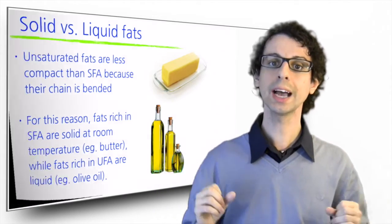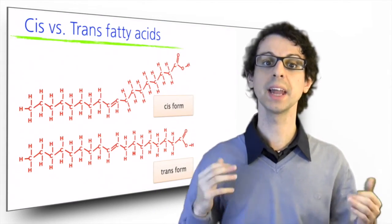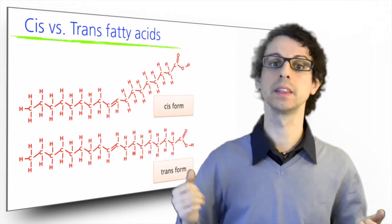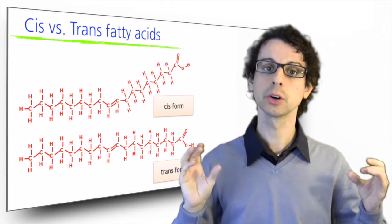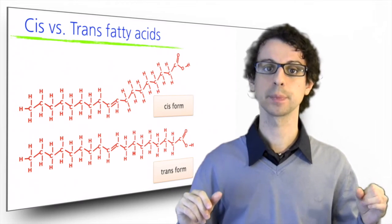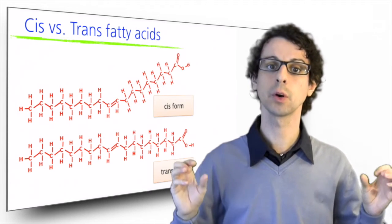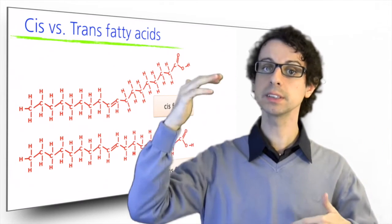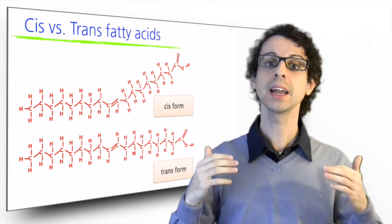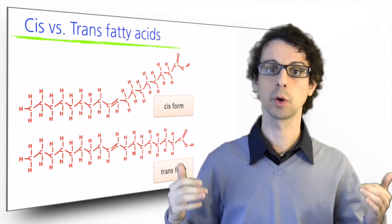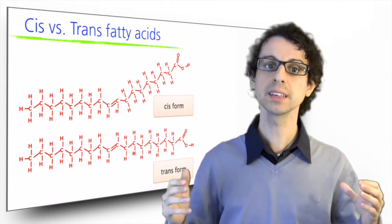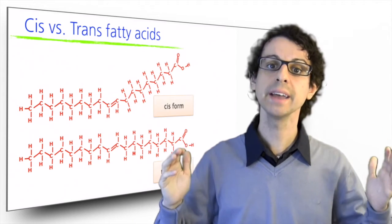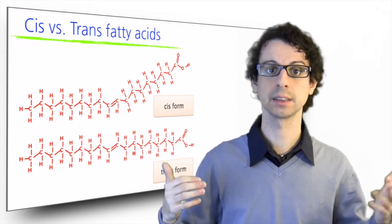We said that normally the two hydrogens in the unsaturation end up on the same side of the double bond, and this causes the kink in the molecule. This is what occurs naturally most of the time, and is what we call the cis form of the fatty acid. However, it can also happen that the two hydrogens end up on opposite sides of the double bond, and that is what we call the trans form of the fatty acid. In this case, the chain stays linear, it doesn't bend, so it will behave very similarly to the saturated fatty acids.